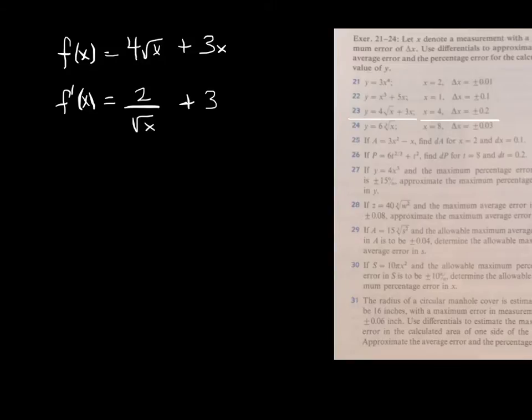And we're given delta x. We're given a is 4. Now, of course, they label it as x, but we're going to call that a. a is 4. Delta x is plus minus 0.2. It's got the plus minus, just like in all error problems.